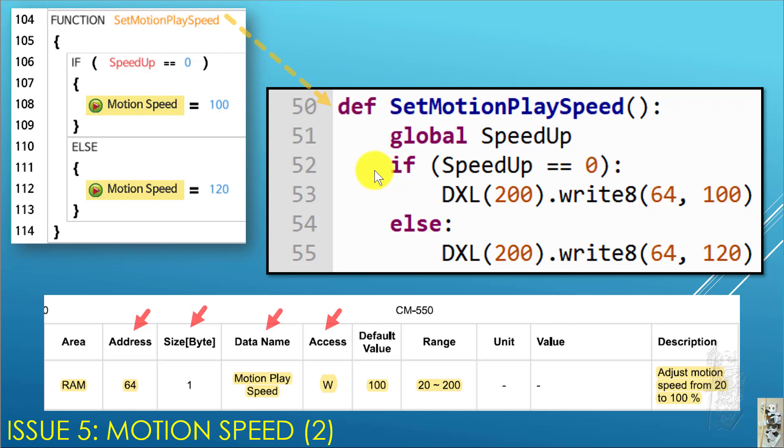So, therefore, in MicroPython, everything the same. You can see, instead of motion speed, I use the DXL200 object because this is a function, a parameter that belongs to the CM550 controller. And I use a write, and I write a byte, so it's write8. Where do I write to? Address 64, and I put in the value 100, 120, depending on the logic. So, you can see, if you understand the task code, you can convert it to MicroPython very easily following this kind of information from the control table.